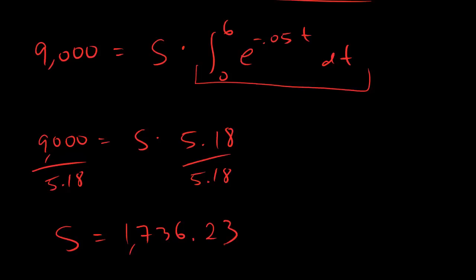All right dudes, so that's the final answer, and what that means is in order to get the present value of $9,000, you would have to get $1,736.23 every year split up in a sort of continuous fashion.